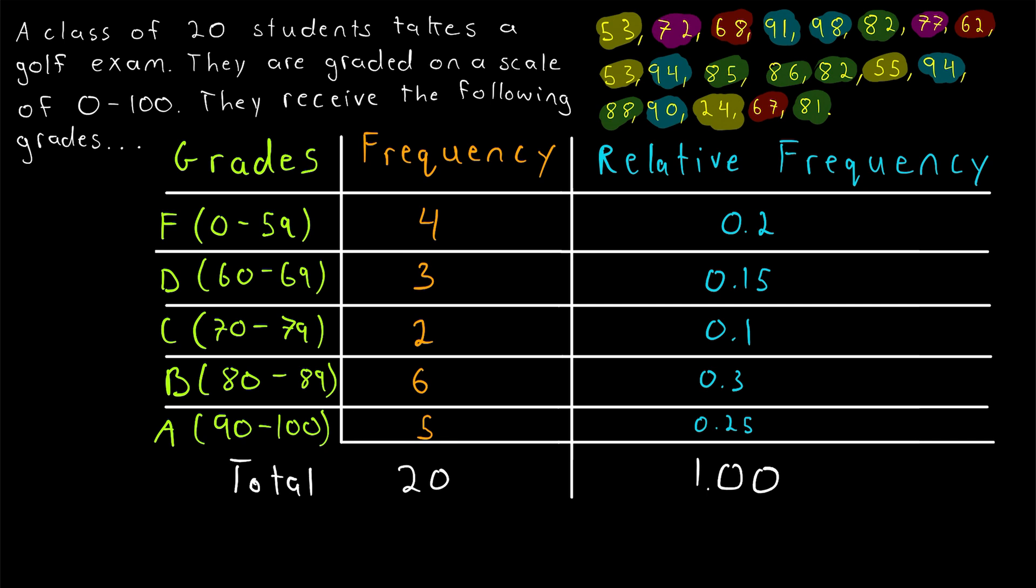And one last thing, remember when sorting data into a frequency table or a relative frequency table like this, if there's some logical ordering to your data points, so like if your data points are numbers and they can be ordered from least to greatest or greatest to least, you should always order them that way in your table. Either order the rows from least to greatest or greatest to least. That makes it much easier to get information from the table. Because then, for example, say I want to know how many students got less than an 80 on this exam. All I have to do is find the row that contains the students that got an 80, which is the B row. And if I add up all of the previous rows, that will tell me the number of students who got less than an 80. A total of 9 students. And of course, since this is a relative frequency table, we can also add up these rows in the relative frequency column to see that students got less than an 80 with a relative frequency of 0.45. So 45% of the students got less than an 80.